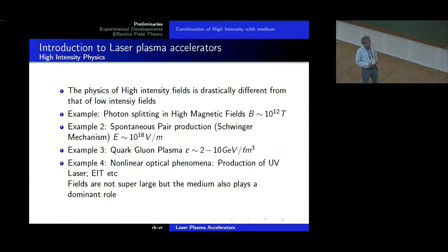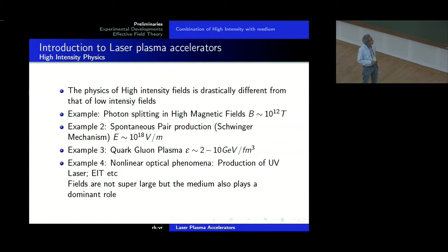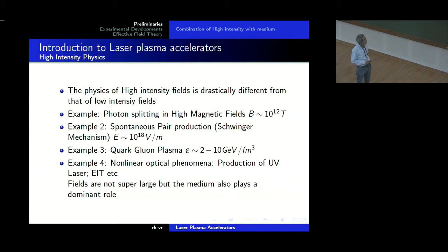Being in high energy physics, I will start with the classic example of photon splitting in very high magnetic fields — which would not be allowed in the absence of a magnetic field — close to the pulsars, when the magnetic field is of the order of 10 to the power of 12 Tesla. Or we have spontaneous pair production, which is the Schwinger mechanism, where you need electric fields of the order of 10 to the power of 18 volts per meter. We have quark-gluon plasma, where we need energy densities of the order of 2 to 10 GeV per Fermi cube. And we have non-linear optical phenomena such as production of ultraviolet laser, EIT — electromagnetically induced transparency — et cetera.